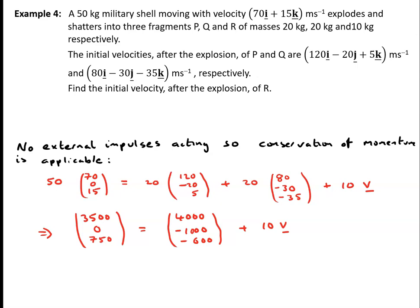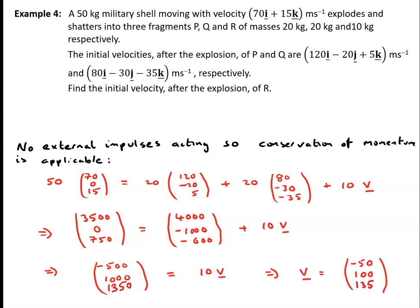So the initial momentum, which is 50 times (70, 0, 15), must equal 20 times (120, -20, 5) plus 20 times (80, -30, 35) plus 10 times v. Doing some arithmetic, the vector (3500, 0, 750) equals (4000, -1000, -600) plus 10v, which gives 10v equals (-500, 1000, 1350). So the initial velocity after the explosion of fragment r is given by the vector (-50, 100, 135) meters per second.